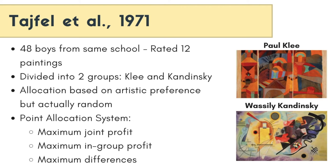The points were given based on three choices of rewards from the Klee and Kandinsky procedure that Tajfel et al. put together. The first option was maximum joint profit, which means giving the largest rewards to members of both groups — both groups would have the same value allocated. The second one was maximum in-group profit, which is giving the largest reward to a member of the in-group. In this experiment, if a Klee member chose a high value for another Klee member, it would give a higher profit to the out-group, which is the Kandinsky group.